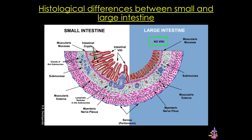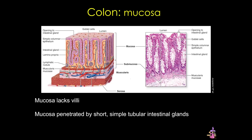There are several differences between the large and small intestine histologically. First, the large intestine lacks plicae circulares and intestinal villi, both of which can be appreciated in this cartoon. Instead, the mucosa of the colon is characterized by straight tubular glands, or crypts of Lieberkühn.